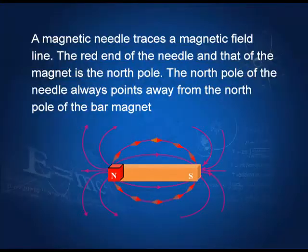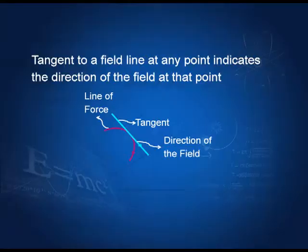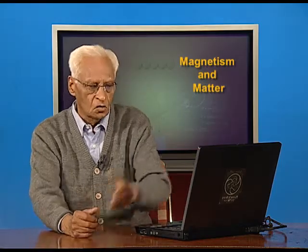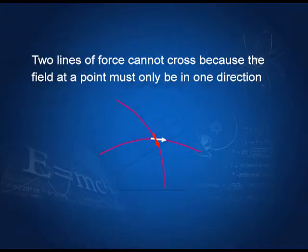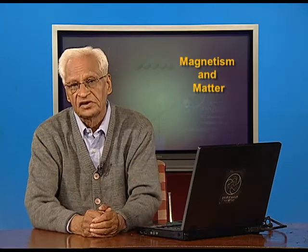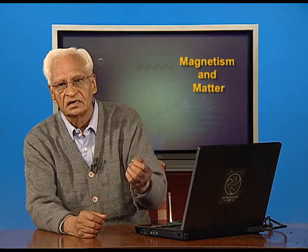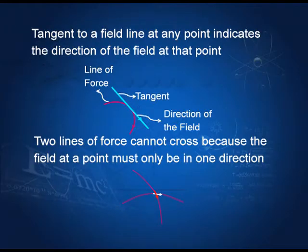You must have done the experiment of drawing the magnetic field lines due to a bar magnet. The tangent to a field line — whether electric or magnetic — gives us the direction of the field at that point. Since the tangent gives the direction of the field, two lines cannot cross, because then there would be two tangents giving two directions of the field at one point, which is not possible. At each point the field is unique and has a single direction.